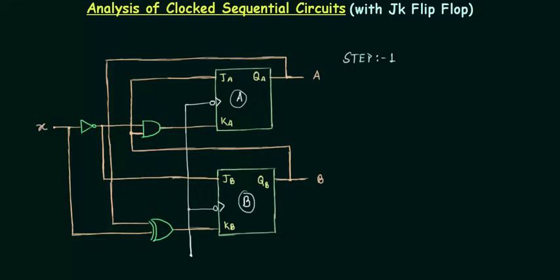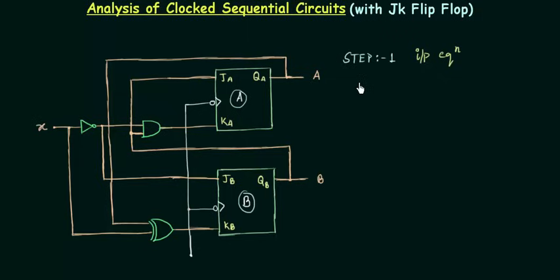In step 1 we will find out the input equation, which is nothing but the expression for JA, KA, JB, and KB. First I will find out the expression for JA, which is very simple — it's simply QB. You can see QB is connected to JA, so JA equals QB.